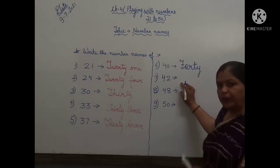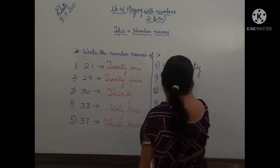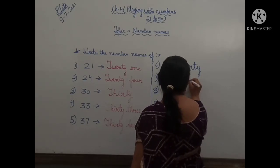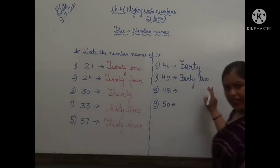Next number, 42. So children, what is the spelling of 40? F-O-R-T-Y. And the spelling of 2 is T-W-O. So the spelling is 42.